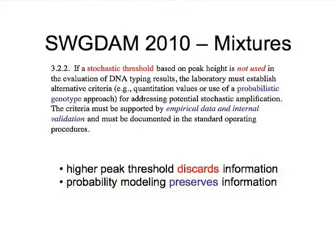The new SWIGDAM guidelines in paragraph 3.2.2 provide for this and say that if you're using quantitative data with probabilistic genotype methods and you empirically support it, then you can essentially ignore the rest of the document. If you're just guessing and playing with thresholds, then you can't. The reason is that it's known that higher peak thresholds will discard information, and probability modeling, as done by many groups around the world, can preserve a lot more of the identification information.